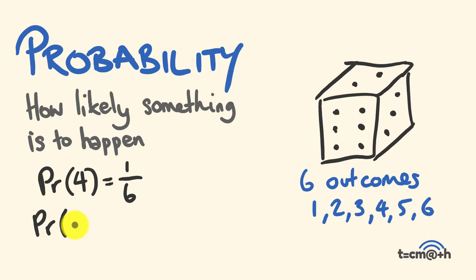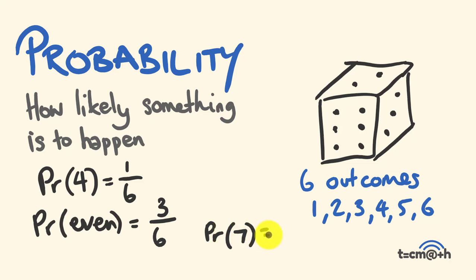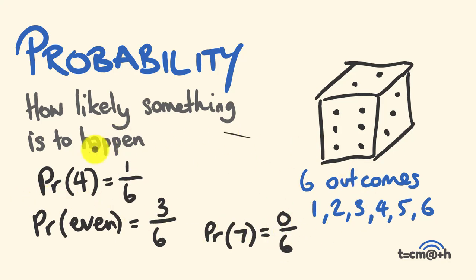What's the probability of rolling an even number? How many possible even numbers are there? Well, 2, 4, and 6 are our even numbers — there are 3 of those out of a possible 6 total outcomes. What about the probability of rolling a 7? How many 7s are there? There's no 7s — there's no chance out of the 6 possible outcomes. So you're getting an idea of how we can assign basic probability.